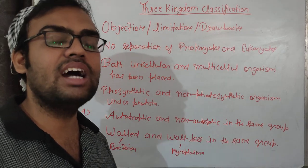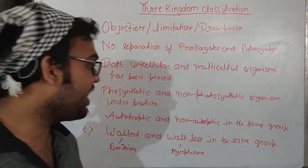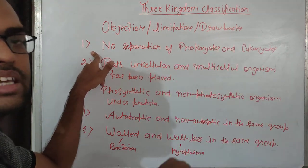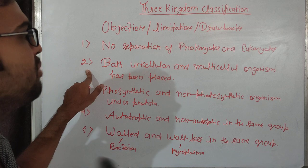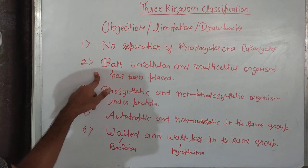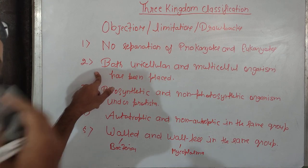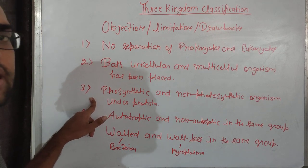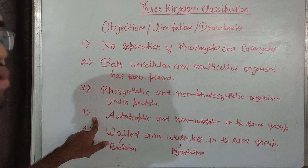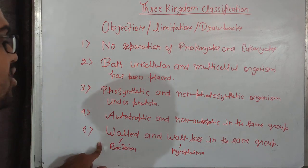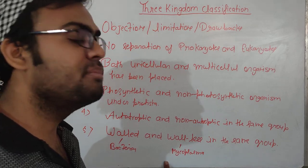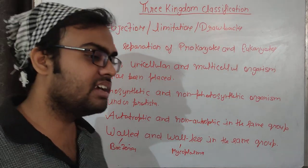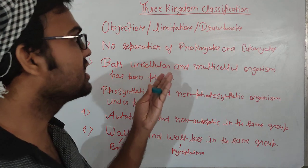So these are the drawbacks of the three kingdom system. First, no separation of Prokaryotes and Eukaryotes. Second, both unicellular and multicellular organisms placed together. Third, photosynthetic and non-photosynthetic organisms placed together. Fourth, autotrophic and heterotrophic placed in the same group. Fifth, walled and wallless organisms also placed in the same group. Because of these drawbacks, the three kingdom classification given by Haeckel has failed.